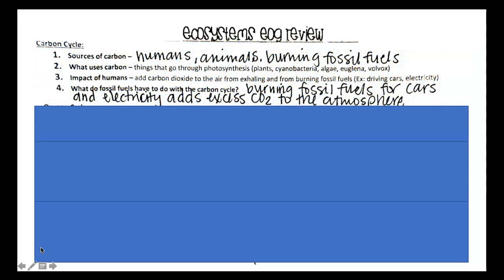So we're going to start off with the carbon cycle. Sources of carbon are going to be humans breathing out carbon dioxide, animals also breathing out carbon dioxide, and both of those will occur through the process of cellular respiration as a product, and the burning of fossil fuels.